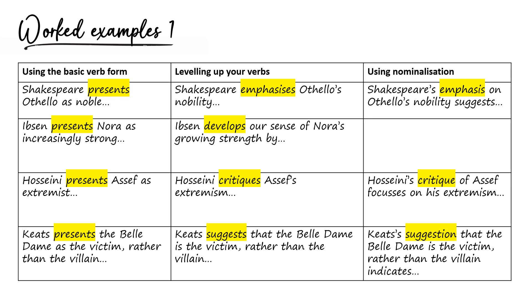Next: 'Hosseini presents Assef as extremist' — thinking about The Kite Runner. I'm 100% sure about this so I want something assertive, but I also want to link out to the key concept in the novel: a critique of extremism and the damage it causes. So I'll use 'critique' — 'Hosseini critiques Assef's extremism.' Using nominalisation, that becomes 'Hosseini's critique of Assef focuses on his extremism.'